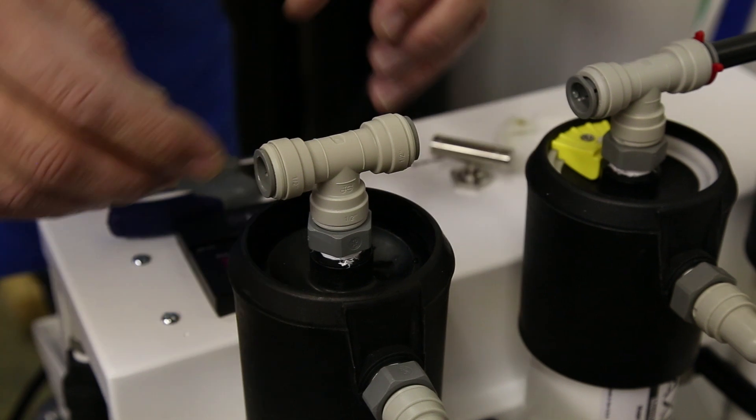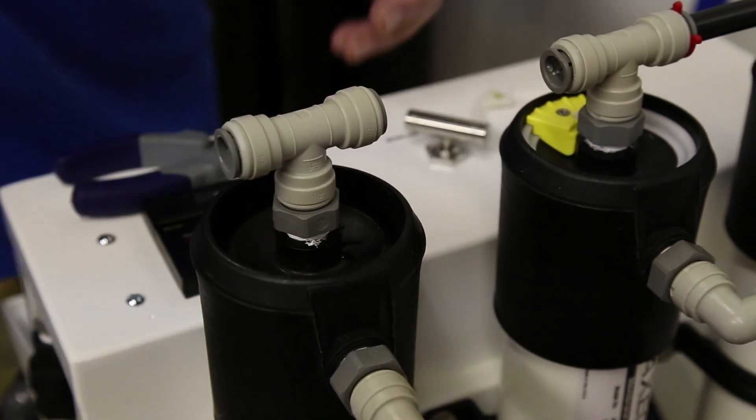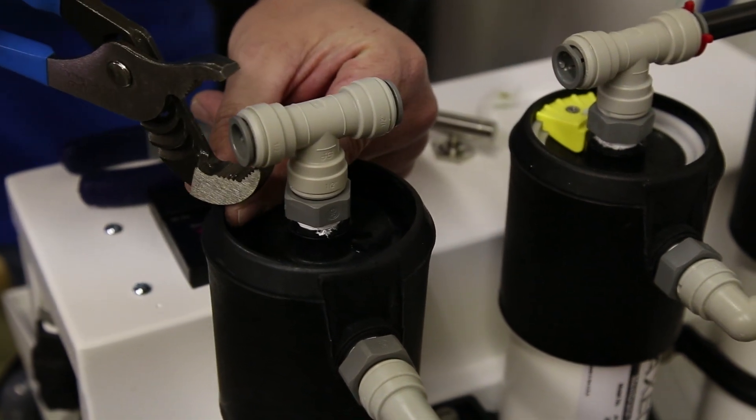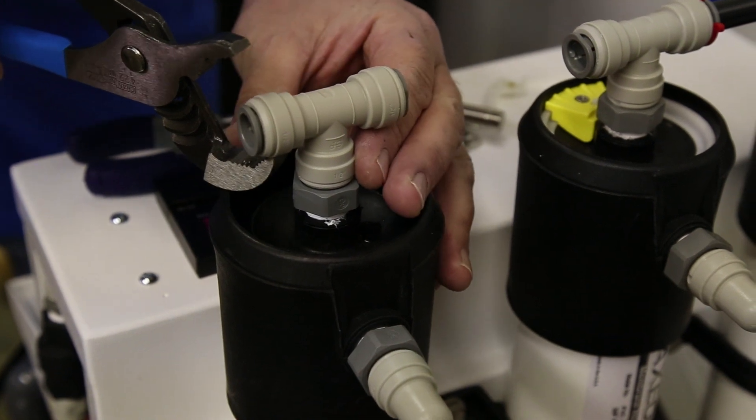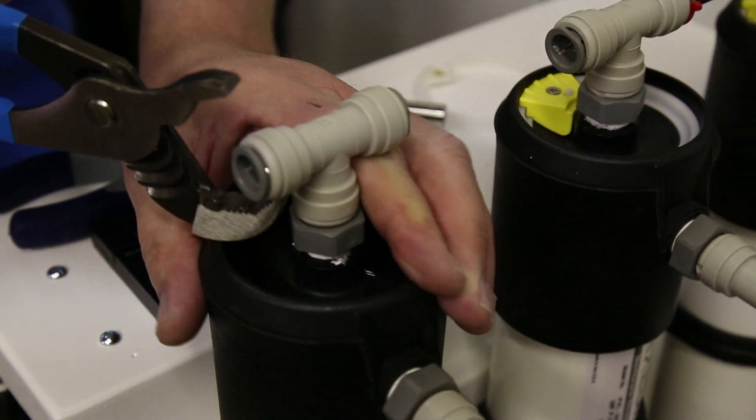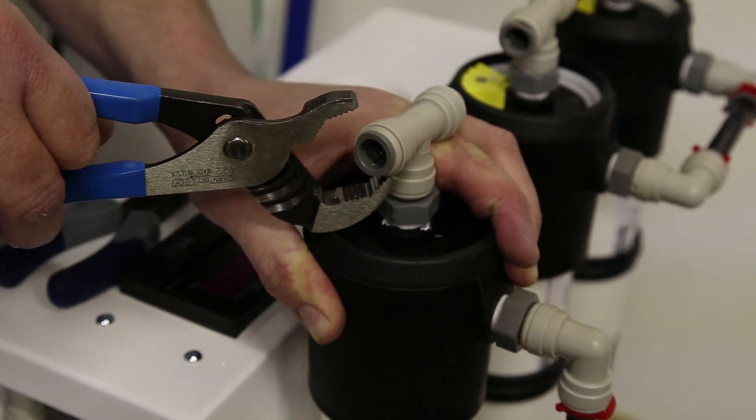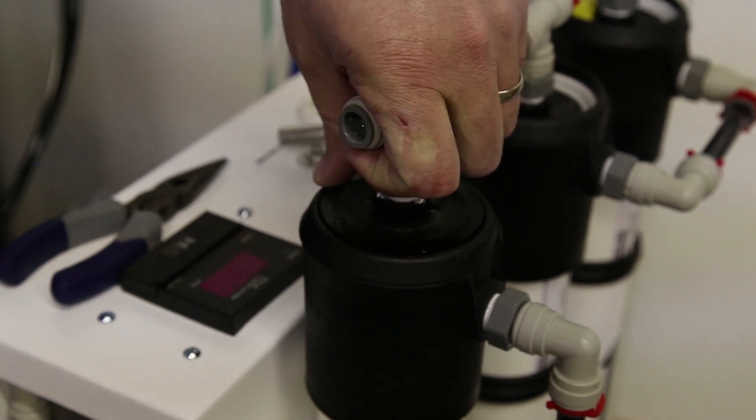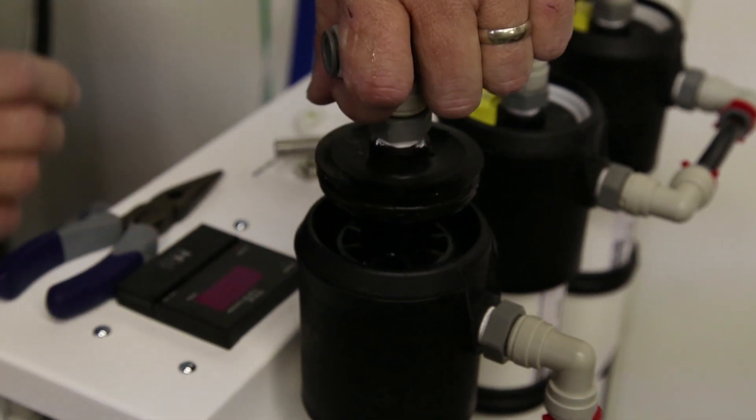Once you have it out, sometimes you can get lucky and just grab it by the fitting and pull it right up. Most the time you cannot. That's when I use my channel locks and you can use this as a crow's foot. Obviously this is all plastic so you can break this, so be careful, but you can use it to give you some leverage.